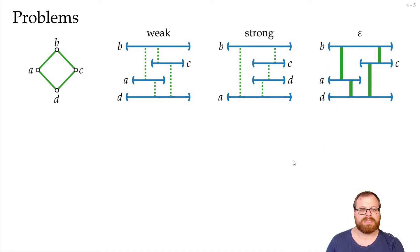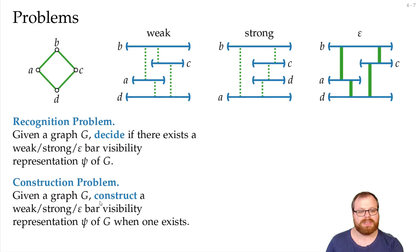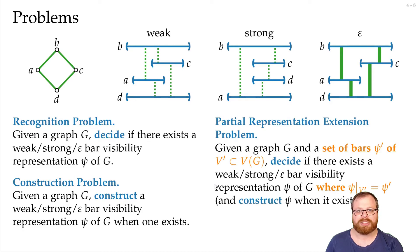Now the main problems that we want to ask ourselves is the recognition problem. That asks if we have some graph can we decide if there exists a bar visibility representation of one of these three types for the graph. The construction problem that doesn't only decide but also constructs a representation if one exists. And the extension problem. If we have some graph and some bars are already drawn can we decide if there is an extension and can we construct it if it exists.